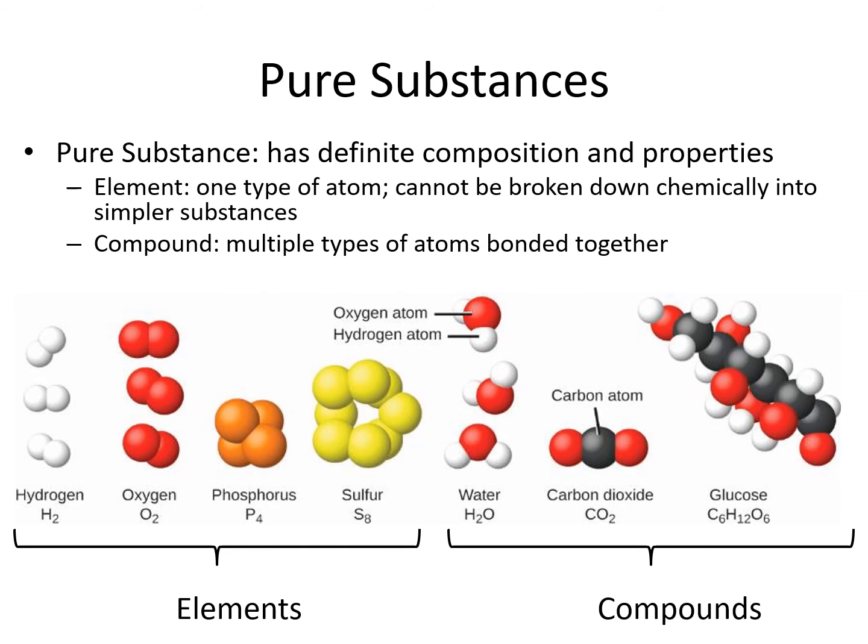Pure substances can be elements, which have only one type of atom from the periodic table. We would classify the oxygen molecule, O2, as an element, because there is only one type of atom — oxygen.